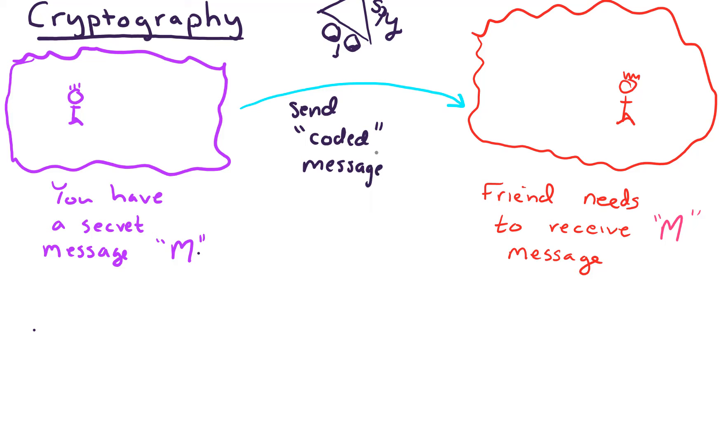And since it's coded, the spy wouldn't be able to interpret it. So to do that, over here we will need to encode our message and then our friend would need a way to decode the message. So let's take a look at how we could do that.